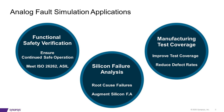The second application is silicon failure analysis. When a chip fails, analog fault simulation can be used to quickly identify the root cause of the failures. The third application is manufacturing test coverage. Analog fault simulation can be applied to improve test coverage and reduce defect rates.